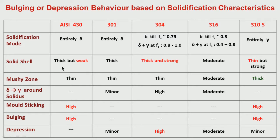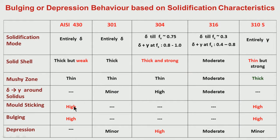For the other extreme chemistry region — when nickel equivalent by chromium equivalent is very low, like for AISI 430, where solidification is entirely through delta — the delta-to-gamma transformation takes place at quite low temperature compared to solidification completion. So the solid shell, though thick because microsegregation is less, is weak. Why weak? Because it is delta. Not only during solidification, even after solidification completion it continues to be delta for quite some temperature. So this weak solid shell may cause sticking and below-the-mold bulging.